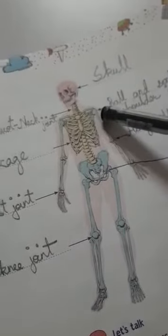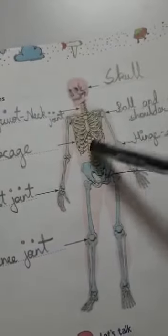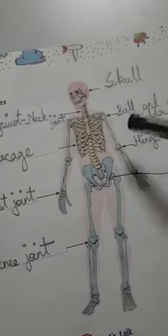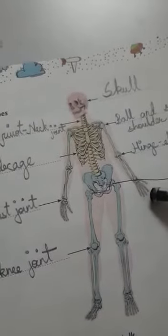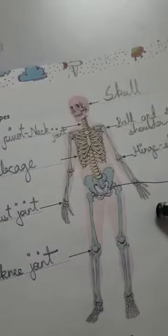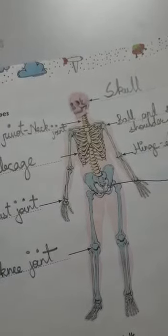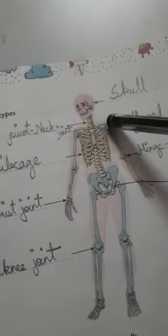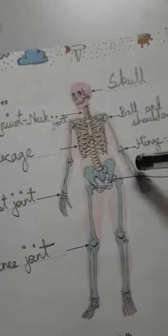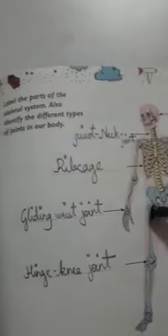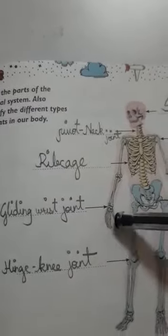Our humerus is attached to the ball and socket joint. The shoulder girdle is made up of two bones: the shoulder blade and the collar bone. The hand and wrist have many small bones. The wrist joint is called a gliding joint, with many bones in the fingers and hand.